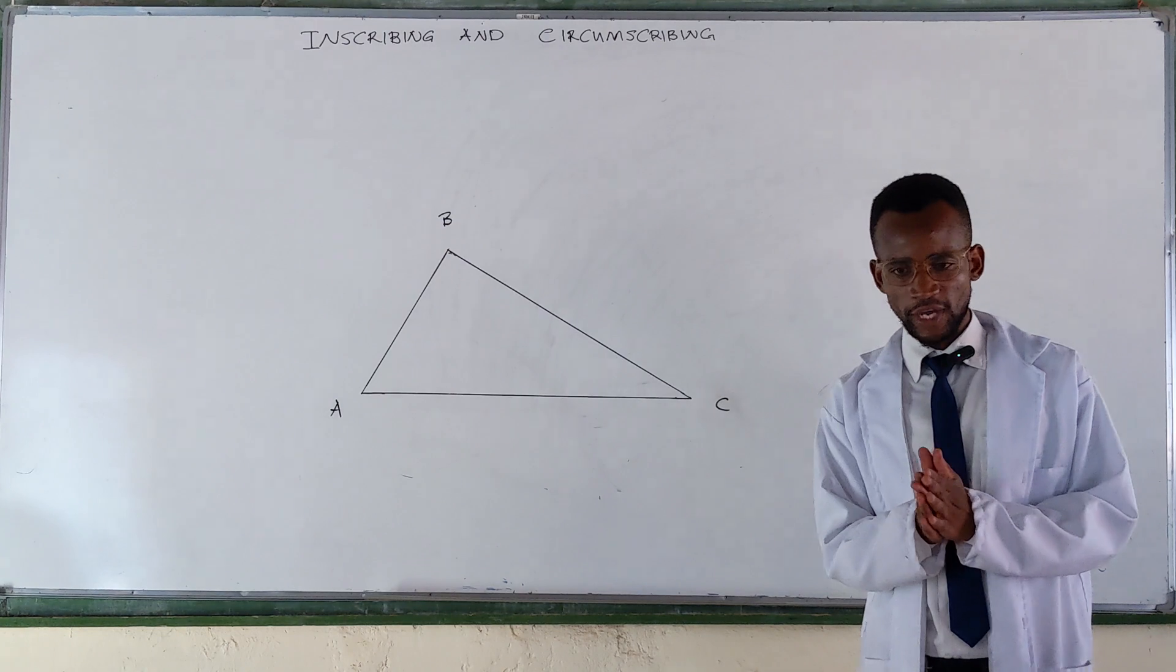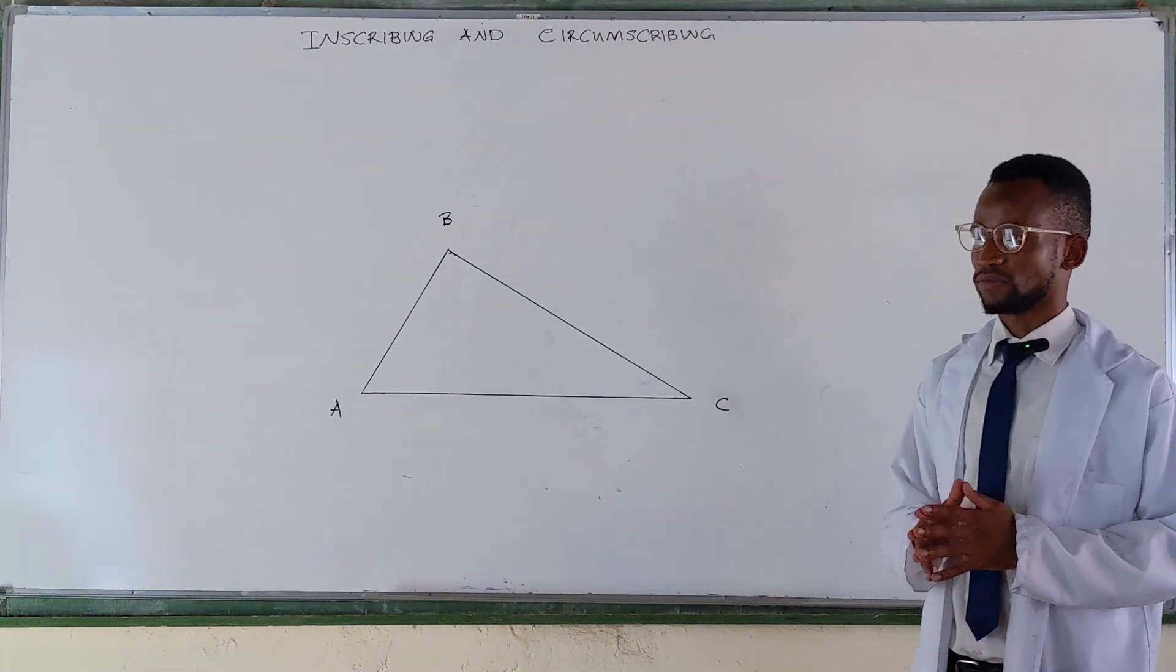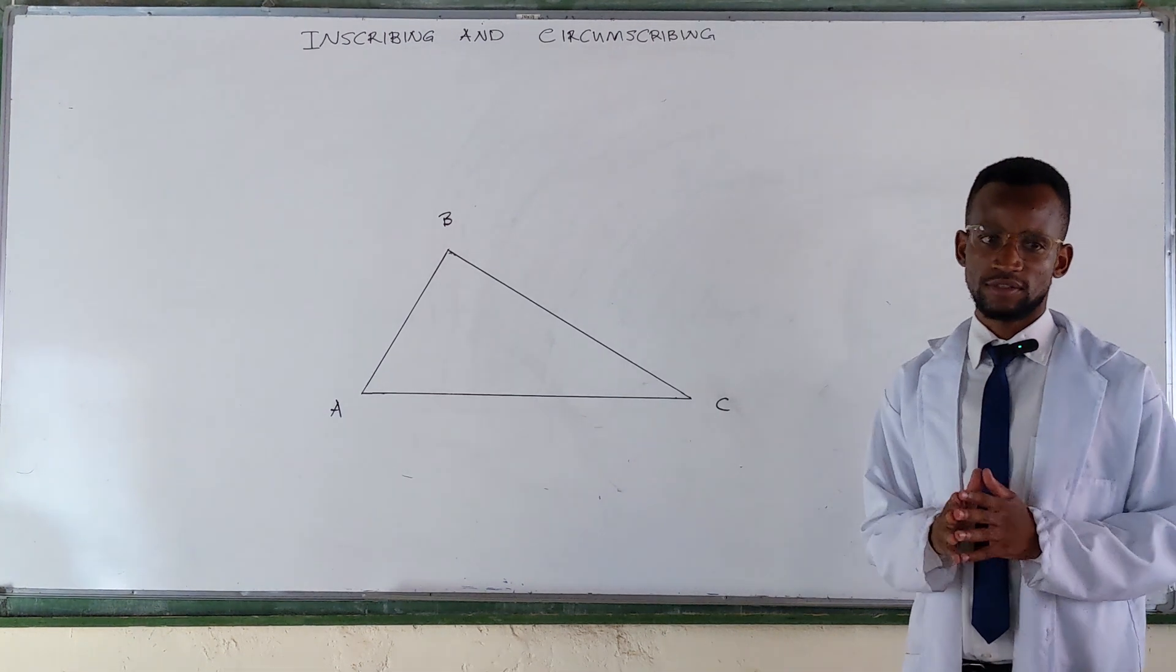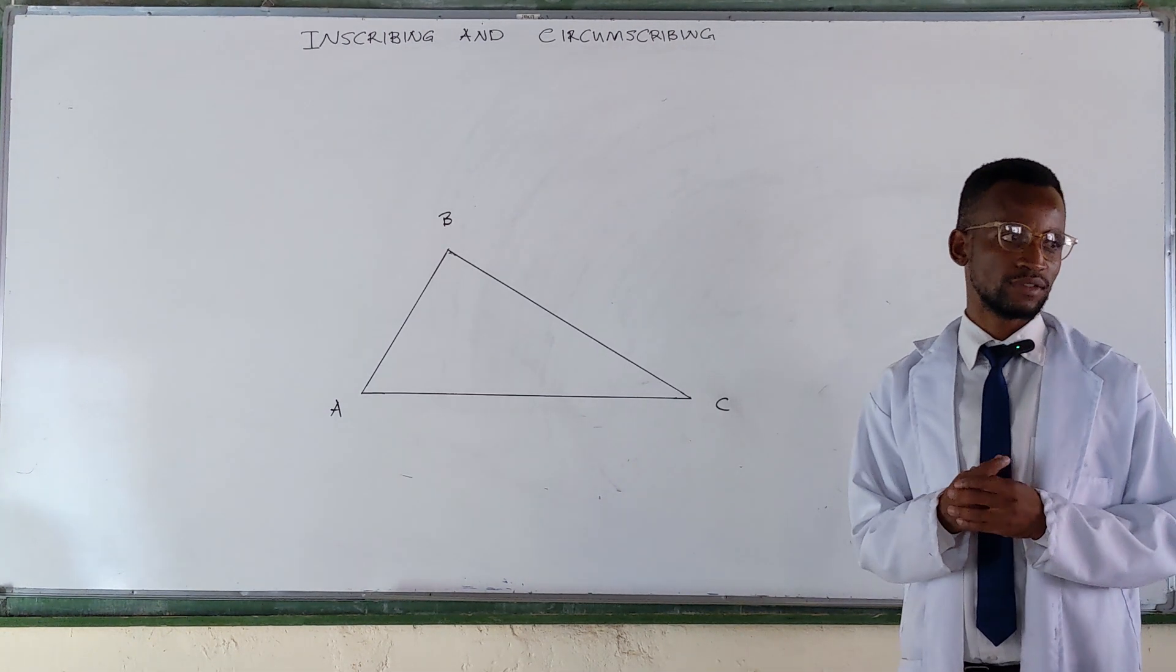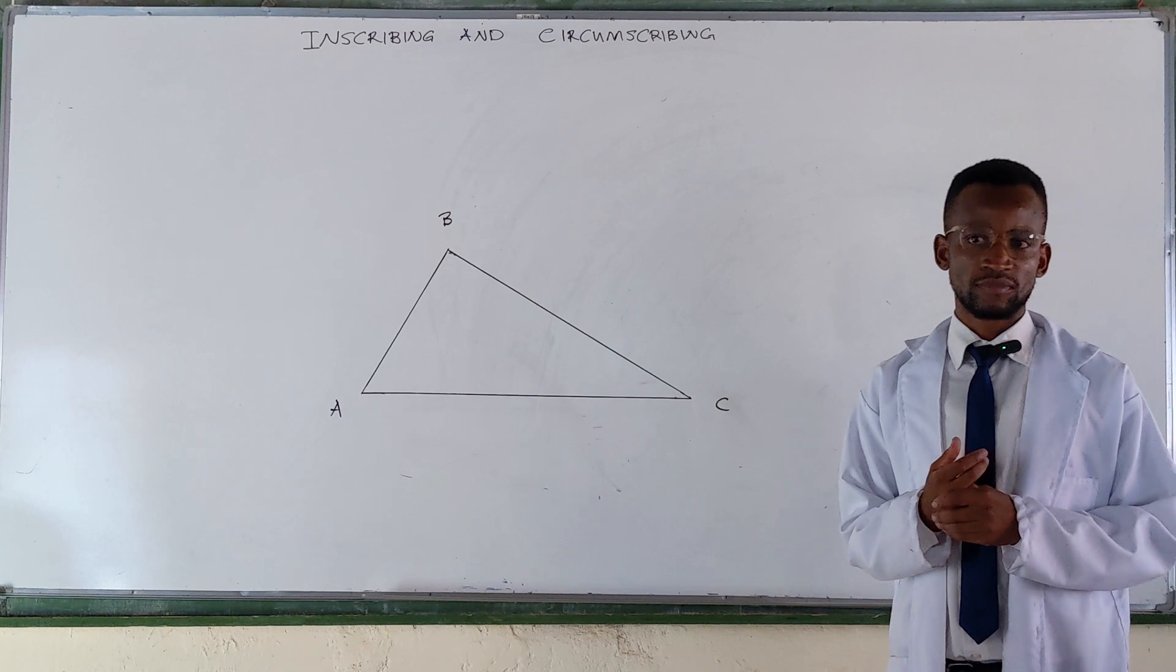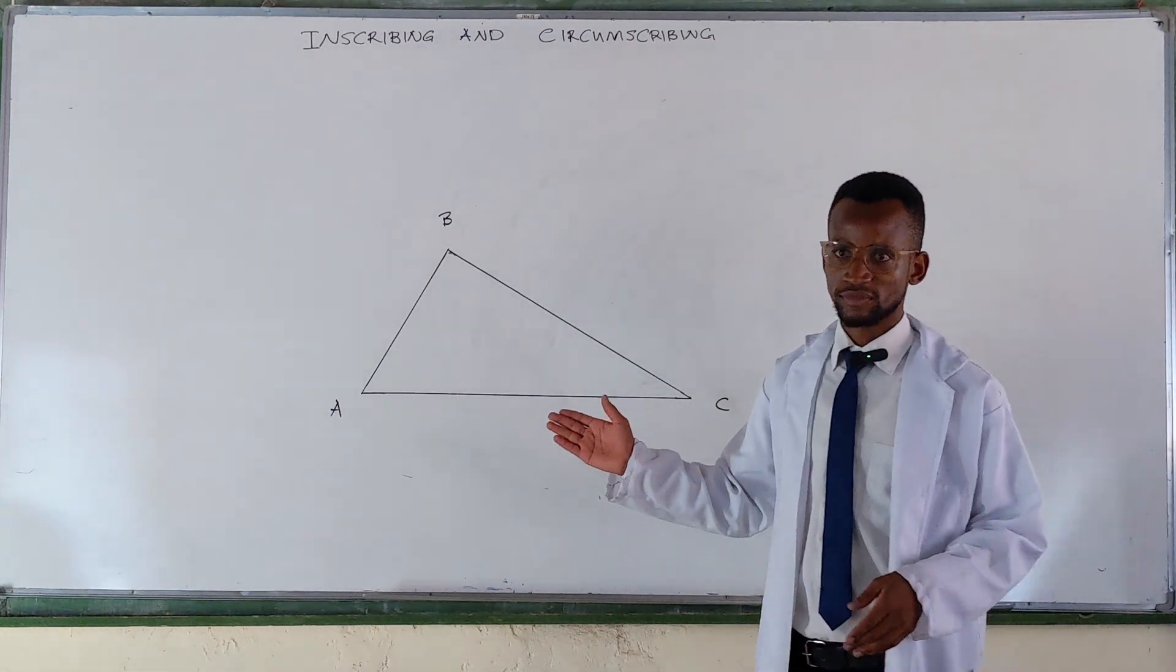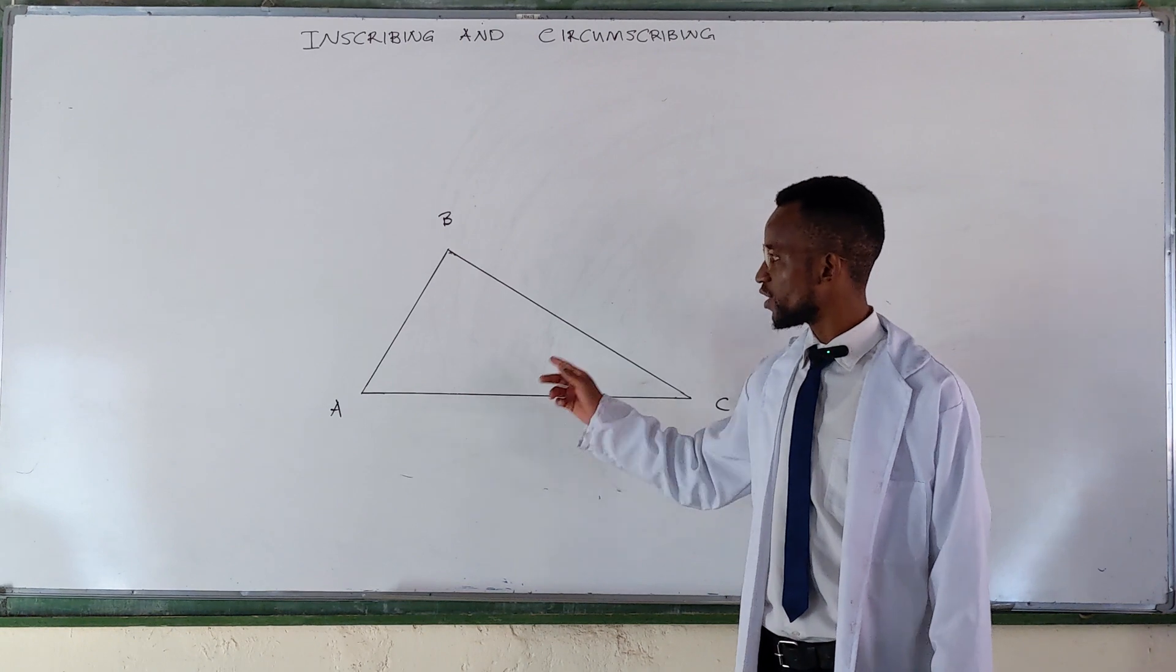Methods for finding a circumcenter. A very simple one. You just bisect any of the two sides of the given triangle. Any of the two sides. So how many sides do we have here? Three sides. Any two sides of the three sides.